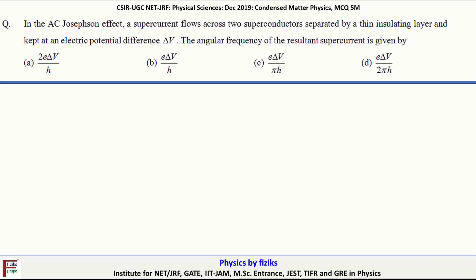This problem states that in AC Josephson effect, a supercurrent flows across two superconductors separated by a thin insulating layer, which has been kept at an electric potential difference of delta V. We have to calculate the angular frequency of this current flowing across the junction.